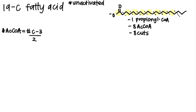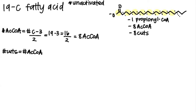Now let's do the math. To determine the number of acetyl-CoA for odd carbon fatty acids, you first subtract three from the number of carbons and then divide by two. So we get 16 divided by two, equal to 8 acetyl-CoA. For odd carbon fatty acids, the number of cuts is equal to the number of acetyl-CoA, so we have eight cuts or eight rounds of beta oxidation. The three carbons account for the propionyl-CoA.